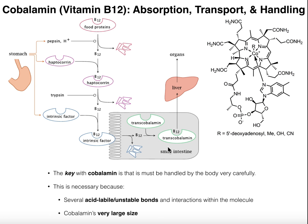Luckily the small intestine also has another B12 binding protein called transcobalamin, and transcobalamin kind of does the job of everything else. It picks up this free B12 in the small intestine and takes it to the liver, where the liver then distributes that B12 to all the peripheral tissues that require B12.